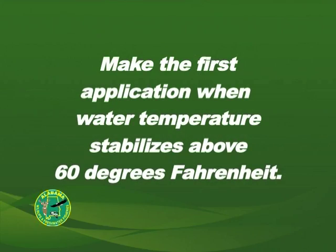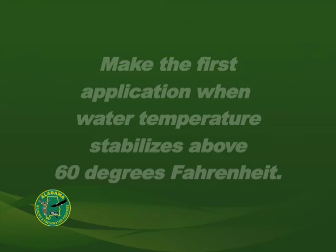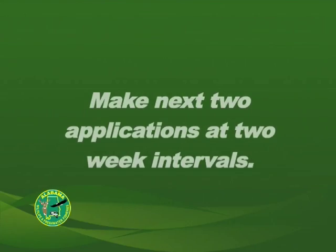Fertilization should be initiated in the spring when the water temperature stabilizes above 60 degrees, usually in late February to early April, depending on the region of the state where the pond is located. The next two applications should be at two-week intervals.